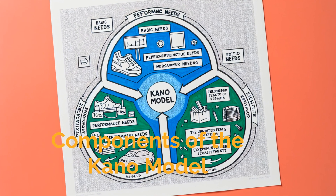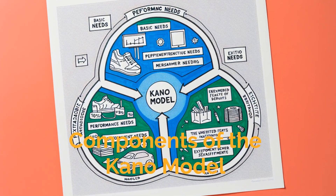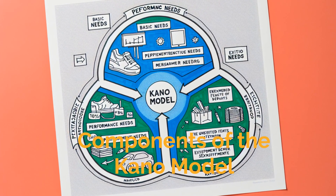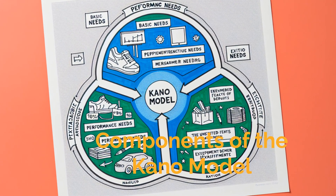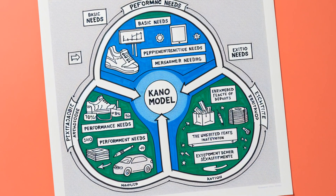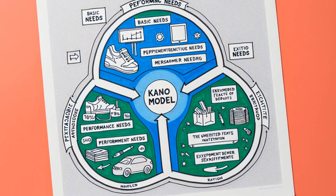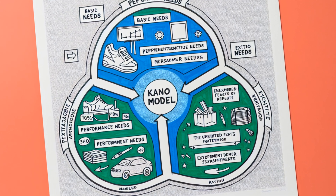The Kano model categorizes product features into three main types: basic needs, performance needs, and excitement needs. Each type affects customer satisfaction differently.